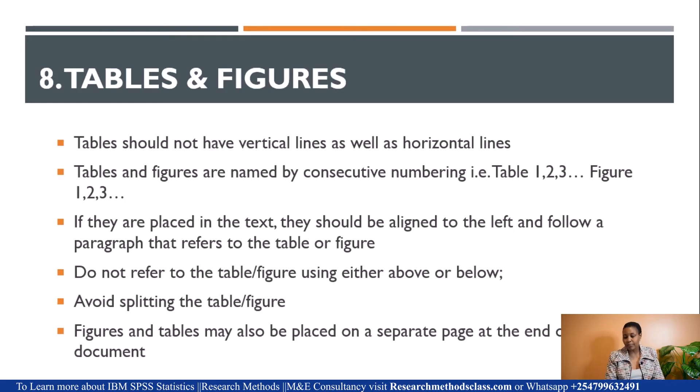Tables and figures: tables should not have vertical lines as well as horizontal lines. That's why we talk about APA tables, similar to what was in 6th edition. Tables and figures should be named consecutively—table one to the last, figure one to the last. As mentioned earlier, some institutions still require you to number tables per chapter number, so follow the institutional guidelines.